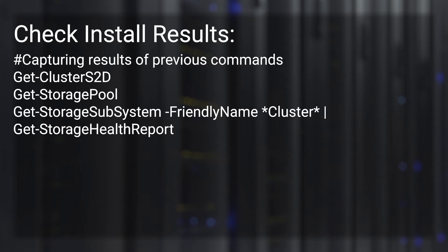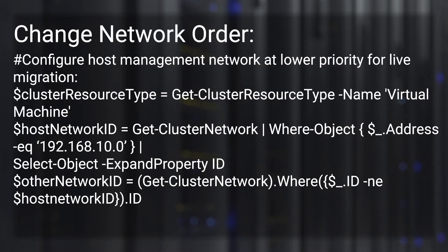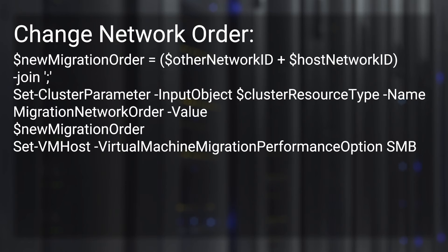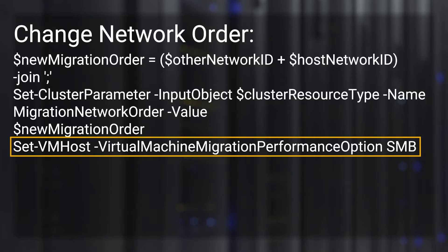After the cluster is created, we will enable storage spaces direct and start using these networks. We're also going to run some commands to get information about what we've done up to this point. The next command changes the order of networks for live migration — we're moving our management network farther down in the list of networks as far as live migrations are concerned, and we're specifying that our migration networks use SMB instead of TCP.